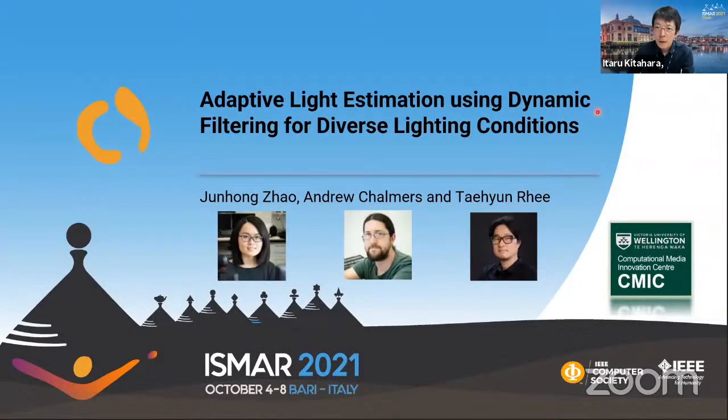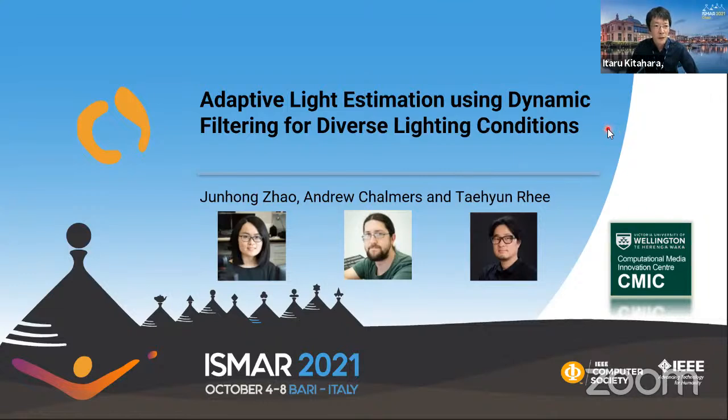No further questions, so the session moves to the next presentation. The next paper is 'Adaptive Light Estimation Using Dynamic Filtering for Diverse Lighting Conditions,' given by Johan Jiao, Andrew Chalmers, and Hyun Lee. Johan Jiao is a postdoctoral researcher at the Computational Media Innovation Center (CMIC) at Victoria University of Wellington, with research interests in machine learning and augmented reality.